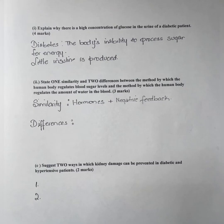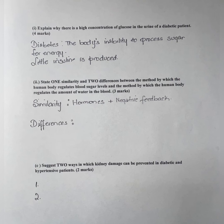Moving on to the next part: explain why there is a high concentration of glucose in the urine of a diabetic patient, for four marks. This is because either the pancreas — the organ responsible for creating the hormone to lower blood glucose level — is defective, or insulin production is limited. We want insulin to lower the high glucose concentration. Once that high amount of blood glucose is in the blood, it passes through the kidney, and the kidney may not be able to retrieve enough of that glucose before it passes out of the body as urine.